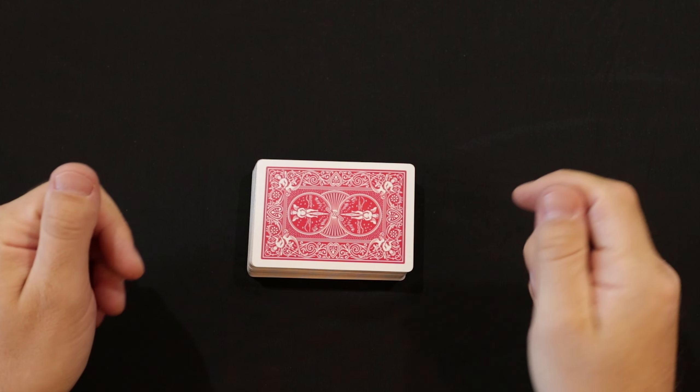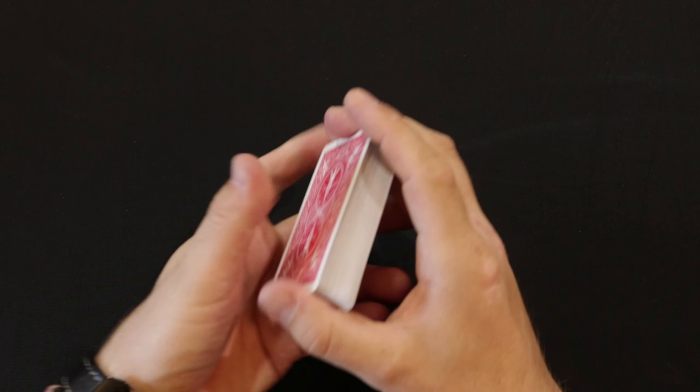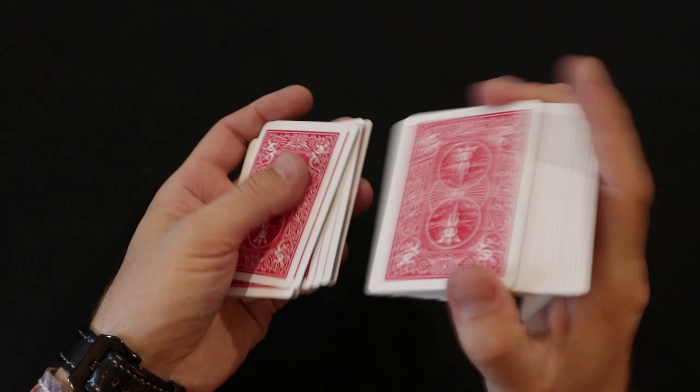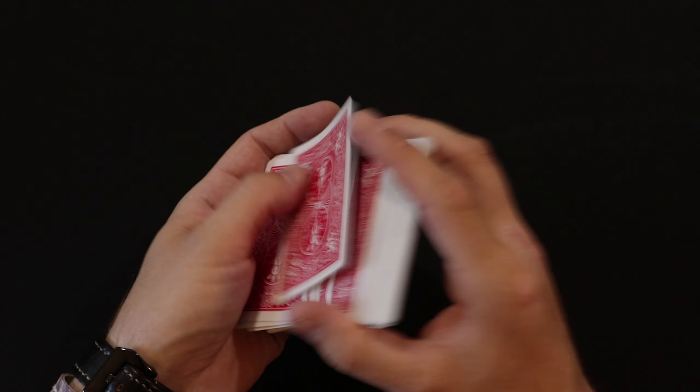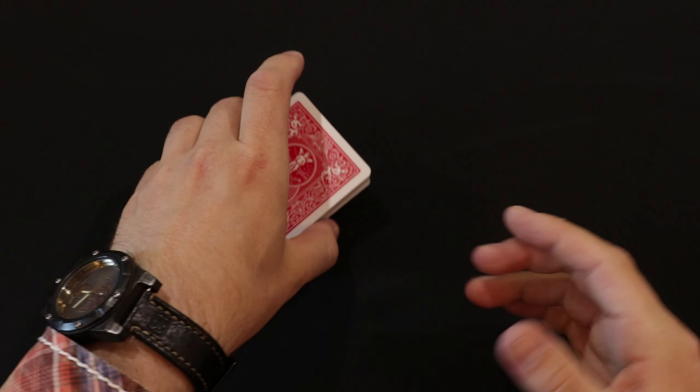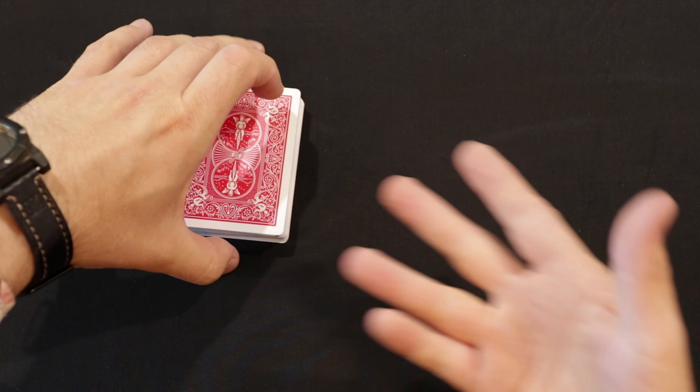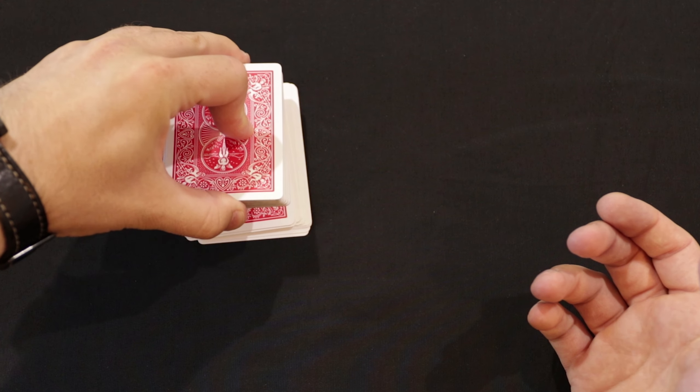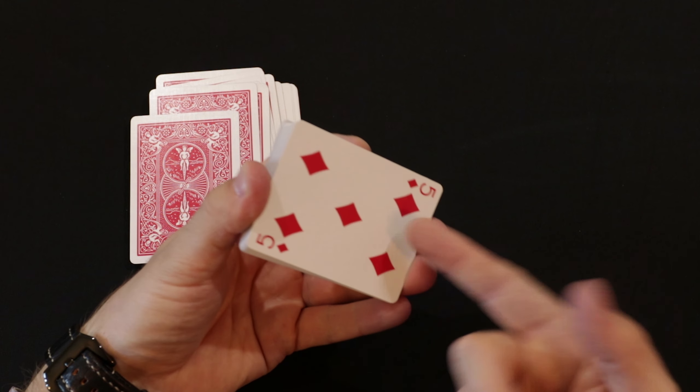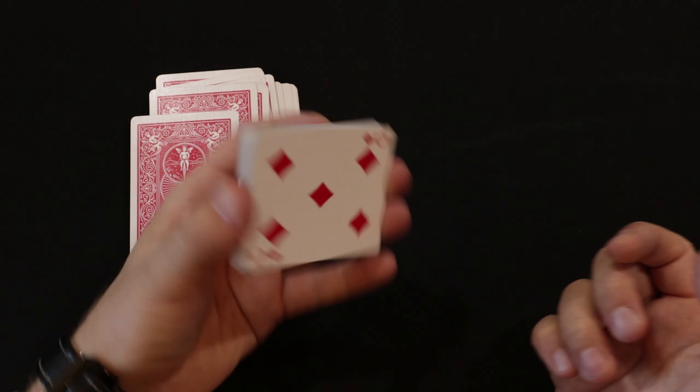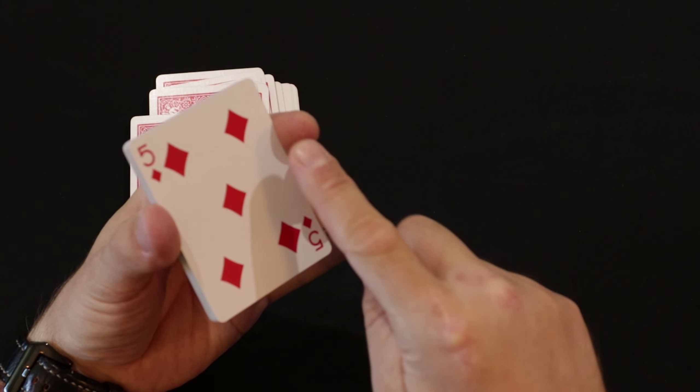Welcome to learning this simple trick. First take a deck of cards and shuffle them as you know how. Now trim the deck at any random place. Show the card to the spectator. It's the five of Diamonds. Put this part of the deck in your left hand in a glide position.